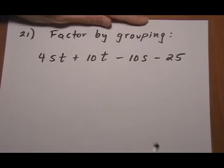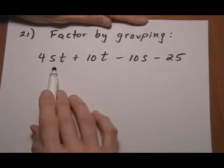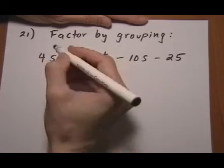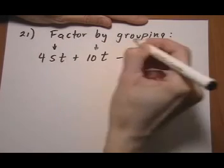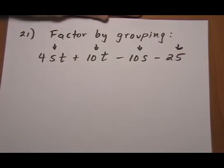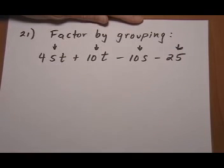So the first thing we want to do, factoring by grouping, the way you know that you might want to factor by grouping is because you have four terms, one, two, three, four. That points you to thinking that you might need to factor by grouping.